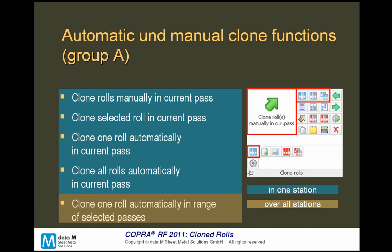In COPRA 2011 you will see the following ribbons split into different areas. The automatic and manual clone functions allow you to clone rolls manually in the current pass, or clone a selected roll in the current pass. Manually means I select one roll as the base roll and select the second one to clone. I can also clone one roll automatically in the current pass, or clone all rolls automatically in the current pass. For trapezoidal sections it might make sense to clone one roll automatically over a complete range of selected passes, meaning over the complete design.